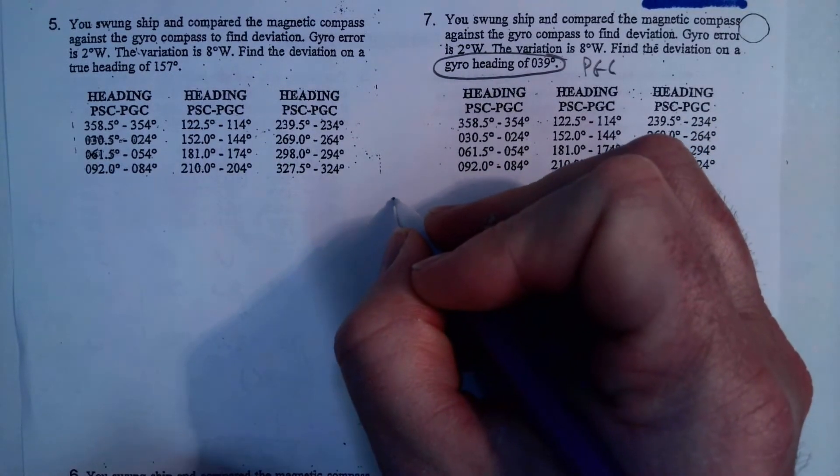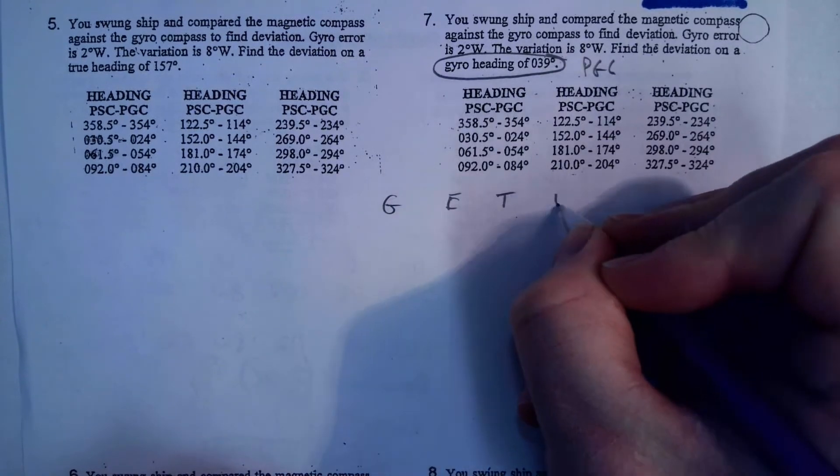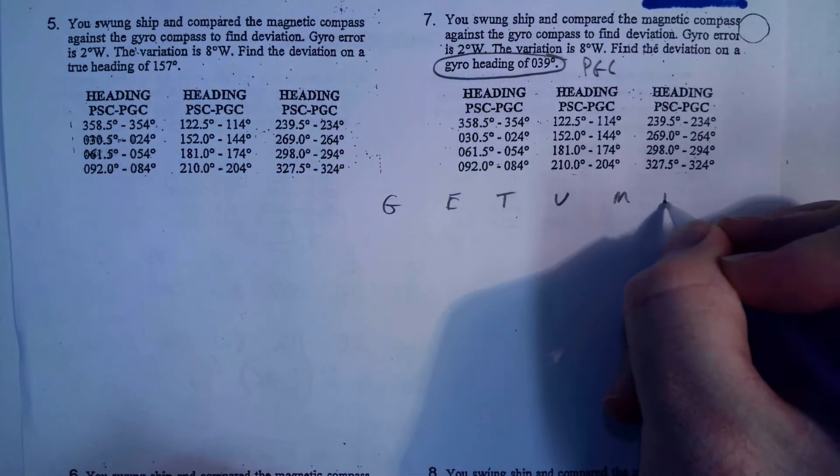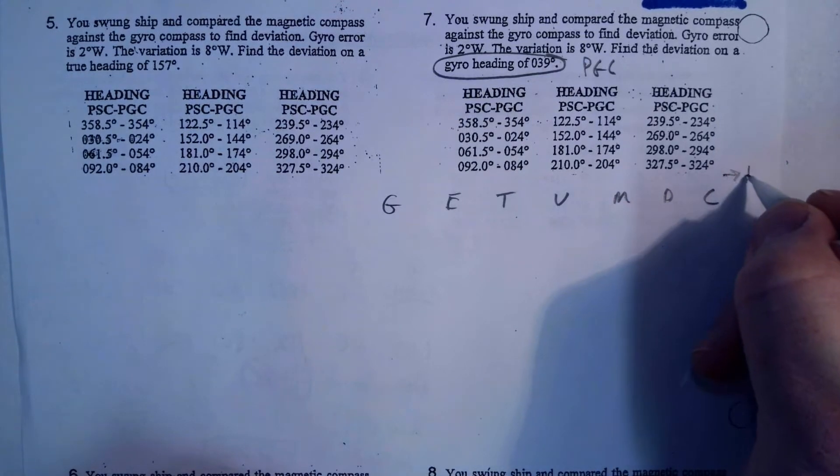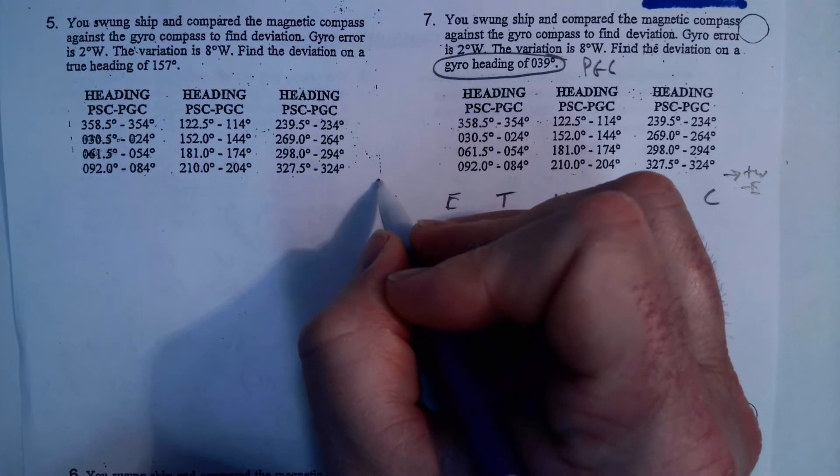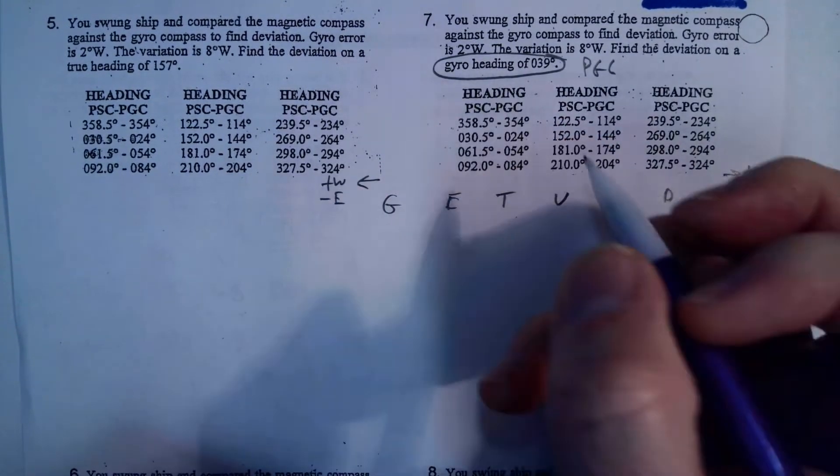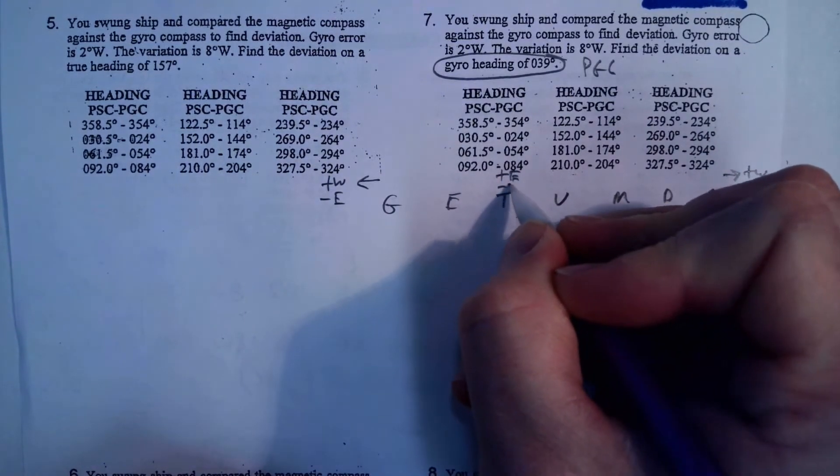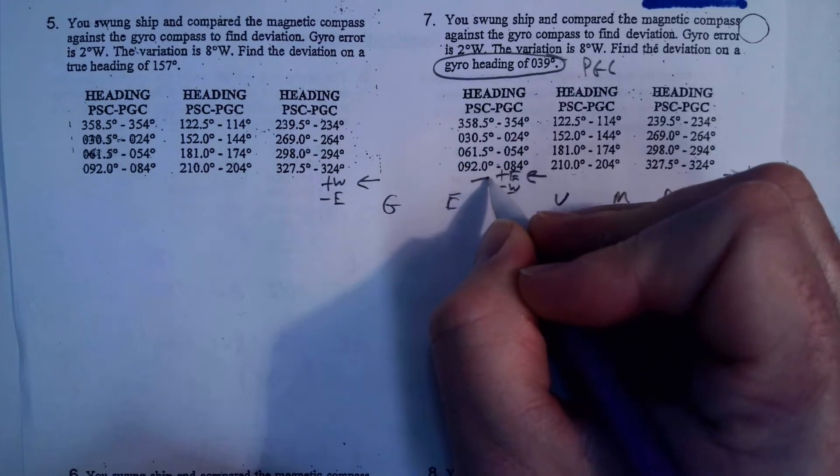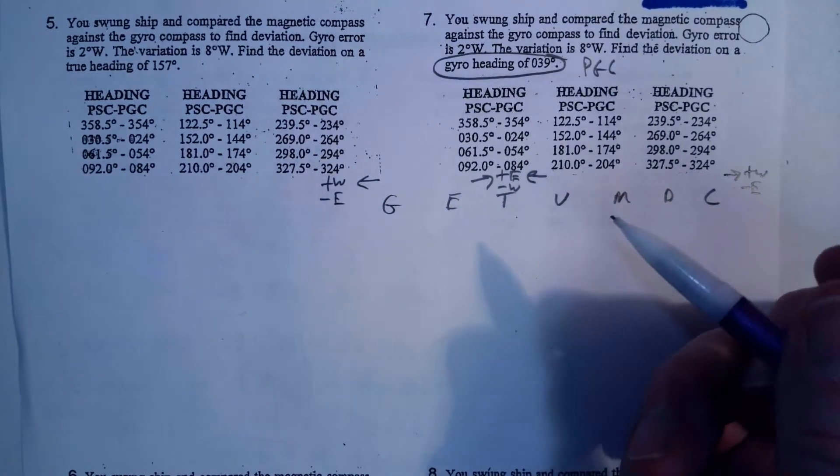We're going to start off with our GetTVMDC. And if I'm going towards compass, I'm going to add west, subtract east, and if I'm going towards true, I'm going to add east and subtract west. So, if I'm going from compass to true, I'll add east, subtract west.